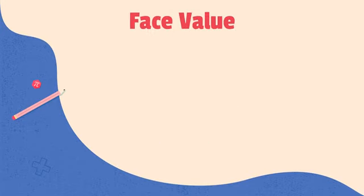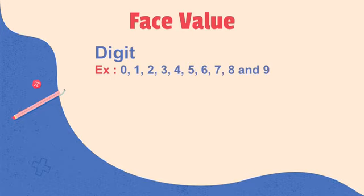Before we understand what is face value, let's understand what is a digit. A digit is a single symbol used to make a numeral. For example: 0, 1, 2, 3, 4, 5, 6, 7, 8, and 9. These 10 digits are used to make a numeral.